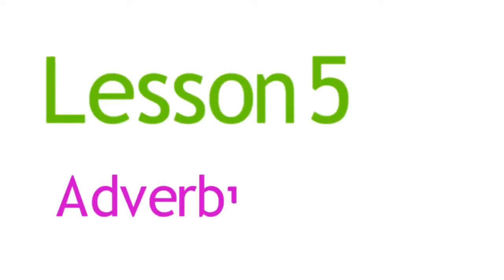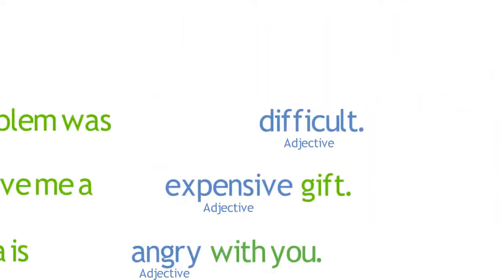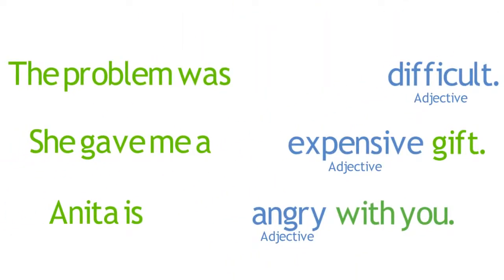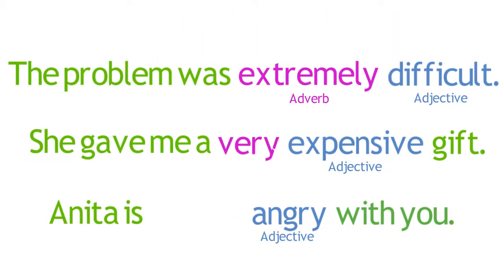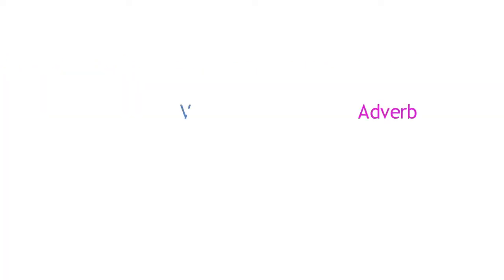Lesson 5: Adverbial Adjuncts. In previous modules, you learned that an adverb is a word that modifies an adjective, as these examples illustrate. Additionally, in many sentences, an adverb can also modify a verb.